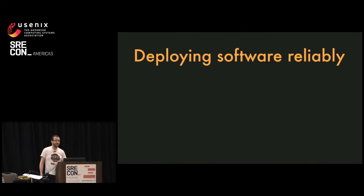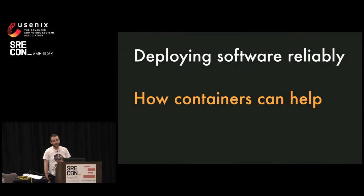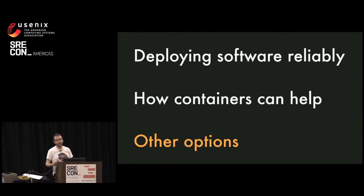If our API goes down, merchants start to lose money, and if we do that to them too often, then we lose the merchants. So today I'm going to focus on one part of reliability: the ability to deploy new versions of software reliably. I'm going to look at how we used containers to do that better, and some other options that might fit different orgs in a better way.